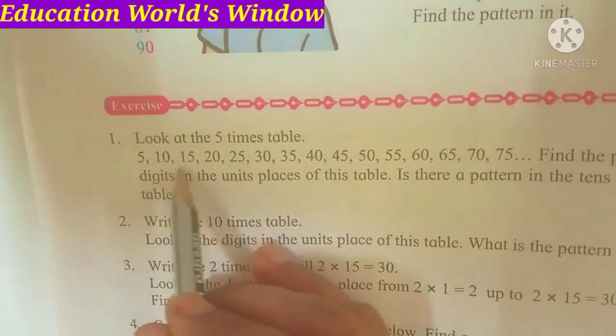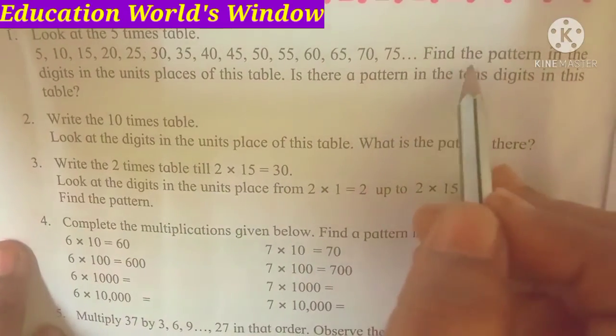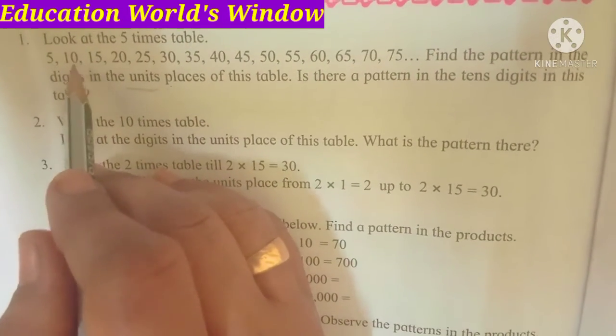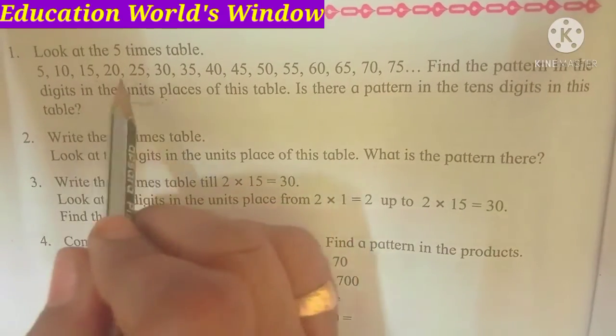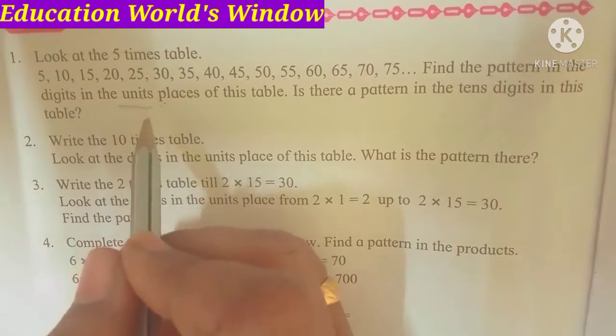I have to tell you what the first question has been asked. Look at the five times table. You have to identify the number of the five times table. In this table, you have to find the number up to 50. Look at the digits in the units place of this table — we will write that you have a table and look at the unit place. I placed 10, 50 — 5, 0, 5, 0 — that's the pattern.